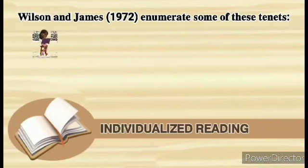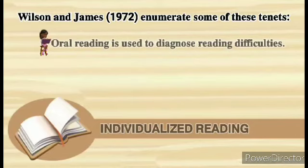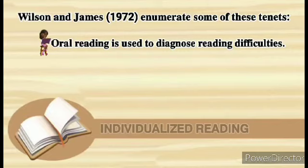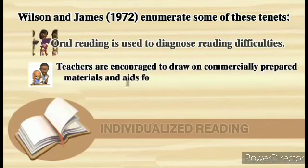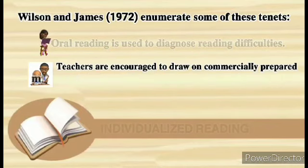The eighth tenet is oral reading is used to diagnose reading difficulties. This kind of training helps students achieve the goal of becoming fluent, automatic readers with full comprehension. Benefits of oral reading include sharpened focus, improved vocabulary, increased comprehension, strengthened listening skills, and engaged young minds. The last tenet is that teachers are encouraged to draw on commercially prepared materials and aids for use in the total reading program. These are the tenets of individualized reading.